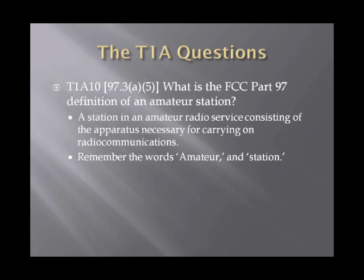What is the FCC Part 97 definition of an amateur station? According to Part 97, it's a station in an amateur radio service consisting of the apparatus necessary for carrying on radio communications. Compared to the rest of the answers, this one fits the question the best. What you're looking for are the words 'amateur' and 'station,' and that'll help you get the question correct.